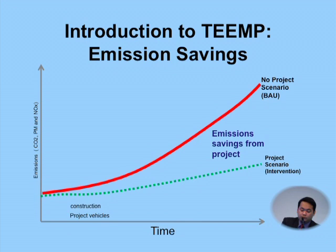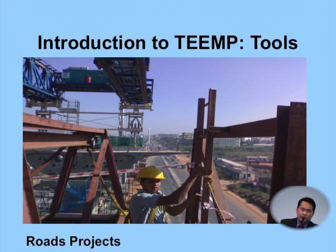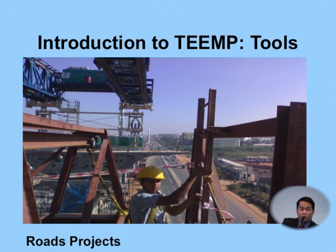On the website there are different tools available — we'll need to update some versions. We have a roads model with three types: highways, urban roads, and rural roads. The road model calculation process is more complex than the others and has been heavily used by the Asian Development Bank.